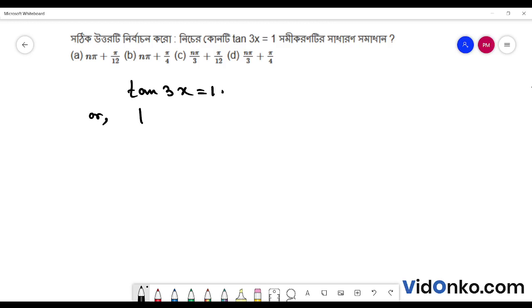First, I will write tan 3x is equal to 1. So, I know that tan theta is equal to tan alpha, so theta is equal to n pi plus alpha.